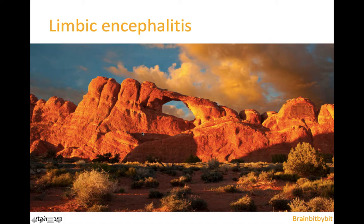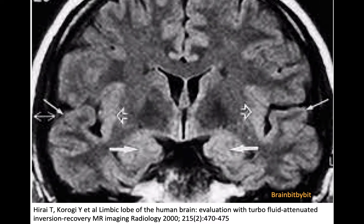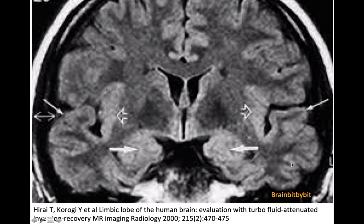The limbic system is not an anatomically defined network, but more of a functional concept involved in controlling emotion and memory. The structures always included are the cingulate gyrus, the amygdala, and the hippocampus. If you look closely at this coronal FLAIR image, these limbic structures have higher signal intensity than the neocortex, and the sub-insular cortex signal intensity is in between that of the hippocampus and neocortex.